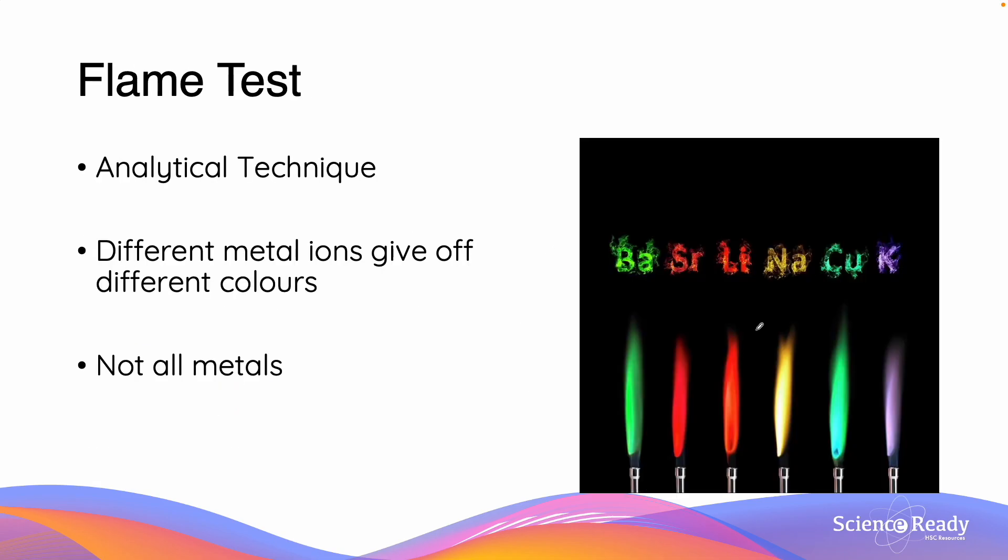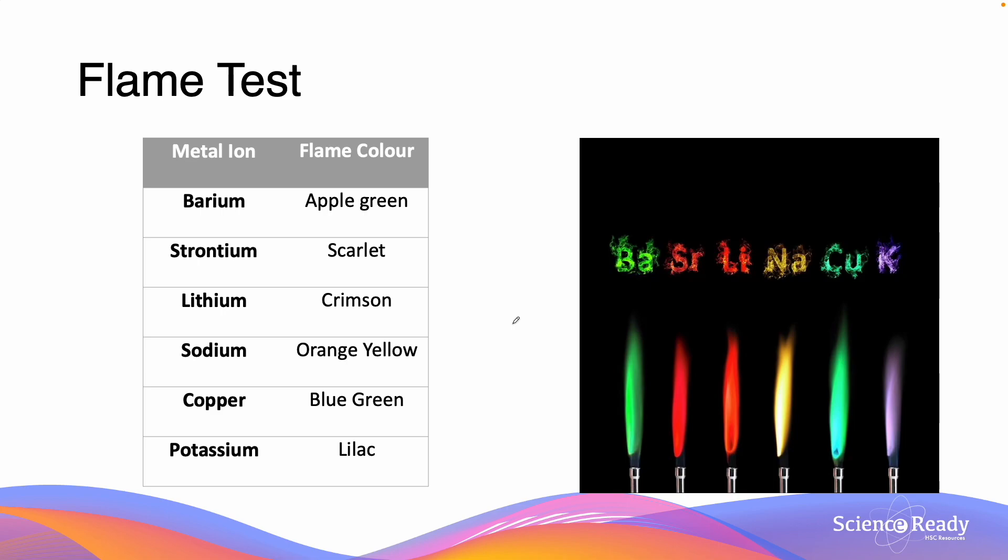The flame test is an analytical technique which we use to identify the ions of multiple different metals. The way that it works is a solution containing different metal ions becomes vaporized in a flame, and we get each of these different colours appearing for the different metals which are in the solution. It's important to note however that we cannot use the flame test for all metals.